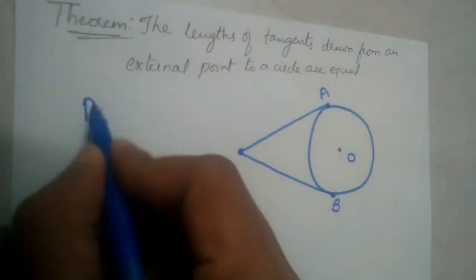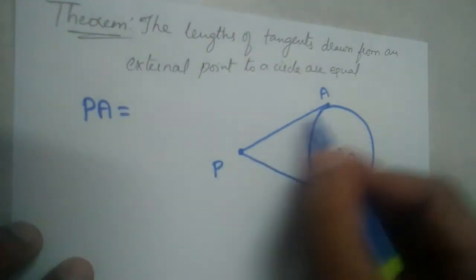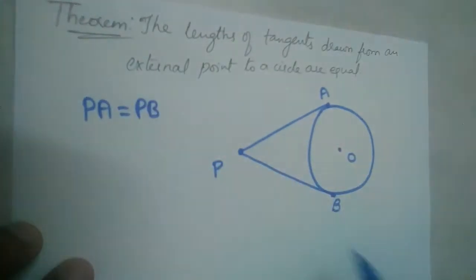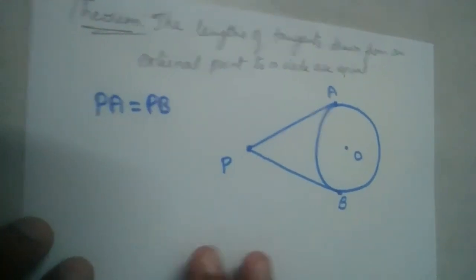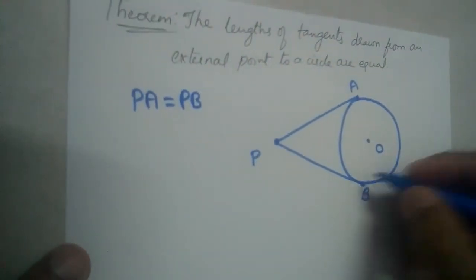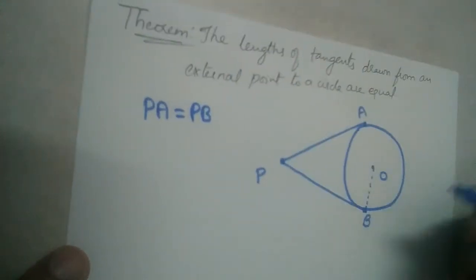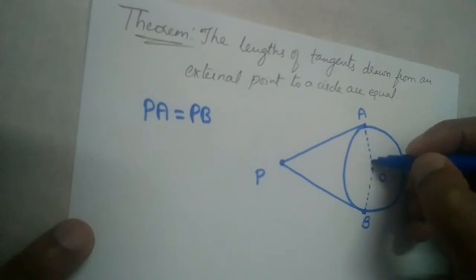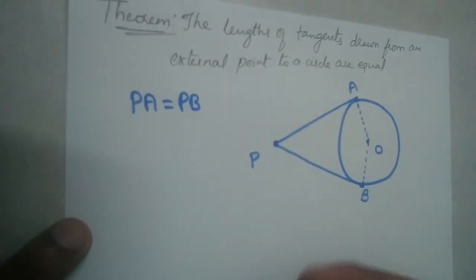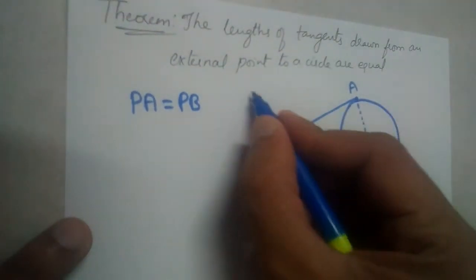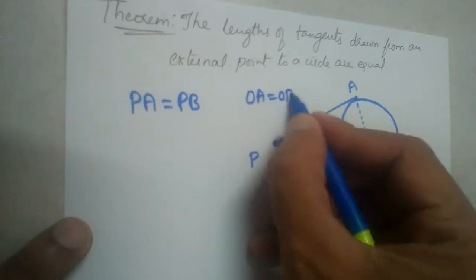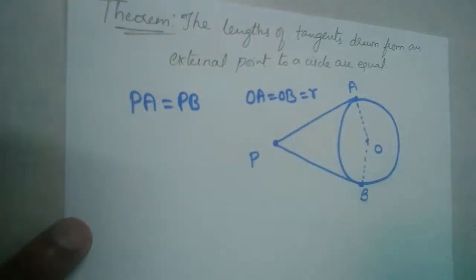Let the point of contact be A and here let the point of contact be B alright. So we should prove that the lengths of the tangent, that is PA is equal to PB alright. So, let us join OB and OA. OB, OA will be equal to OB, it is equal to R, radius of the circle right.